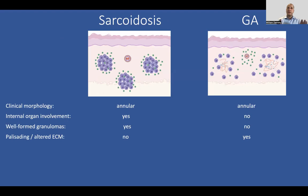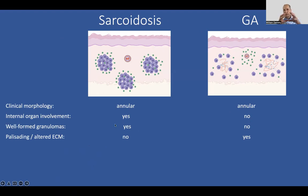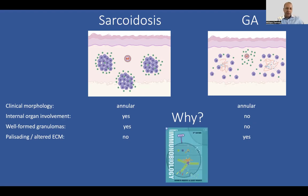In my laboratory, we're really interested in clinical, pathologic, and immunologic correlation. Looking at sarcoidosis and GA from a bird's eye view, there are some similarities and some differences. One similarity is that the clinical lesions are both annular. In sarcoidosis we have internal organ involvement, whereas in granuloma annulare in general we do not. In sarcoidosis we have well-formed granulomas — tightly packed macrophages in a sphere — whereas in granuloma annulare we don't. In sarcoidosis we tend not to have palisading or altered extracellular matrix material, whereas in granuloma annulare we do. The question is why.